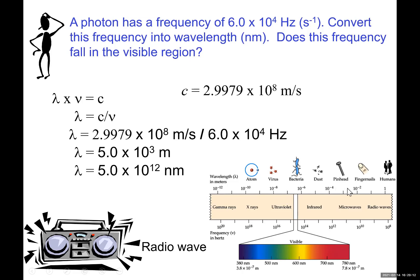If you look at this electromagnetic radiation, where is wavelength of 5.0 times 10 to the 12 nanometer? It's really huge wavelengths. That means it's not in the visible range. Visible range would have been here, but we're looking at wavelengths which are huge. So no, this particular electromagnetic radiation is not visible to us.